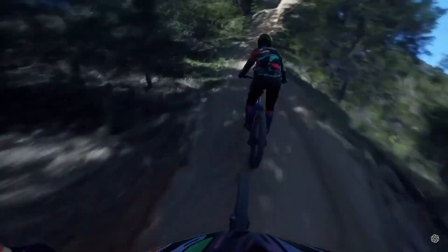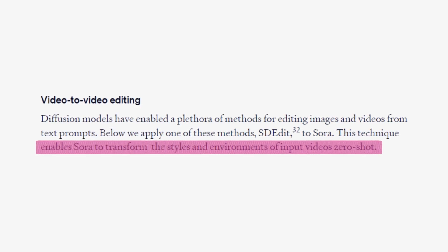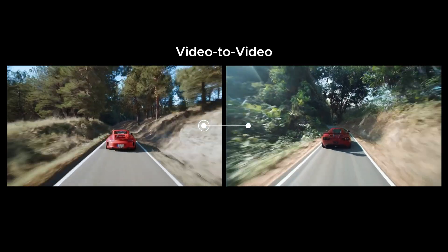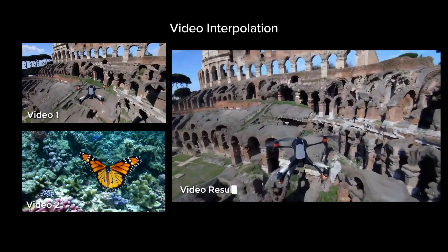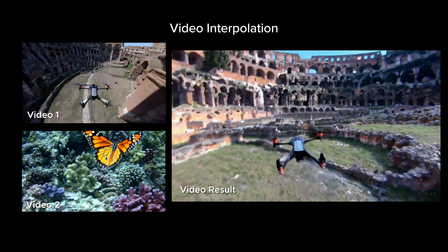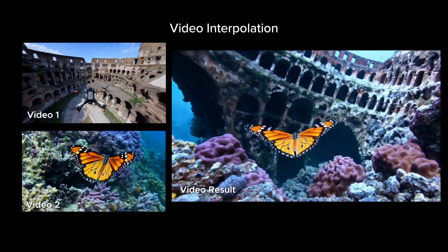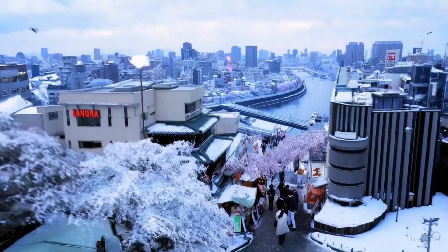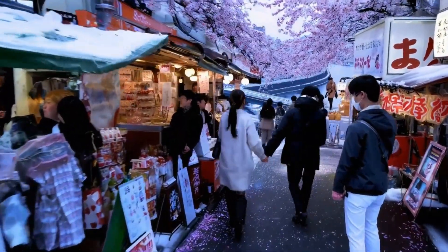There's more that Sora can do. With video-to-video editing, you can change the style or the environment of a video — like changing the environment from a snowy forest road to a lush jungle full of greenery. There's also video interpolation, where you can take two videos and Sora can combine them to create a seamless transition. Notice how the Colosseum environment blends progressively with the underwater environment. And one of the most amazing features is that Sora is capable of producing dynamic camera motions, almost like a hyper-realistic 3D simulation.